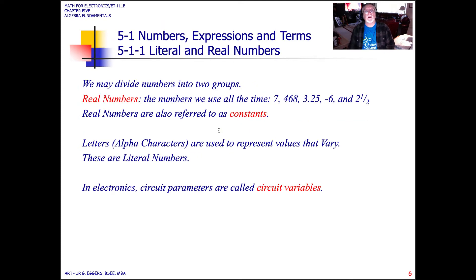So in looking at the difference between literals and real numbers, real numbers are any number: 7, 468, 3.25, etc. We also call them constants. They also become coefficients, often for literals. Letters, or alpha characters, are used to represent values that vary. These become our literal numbers.